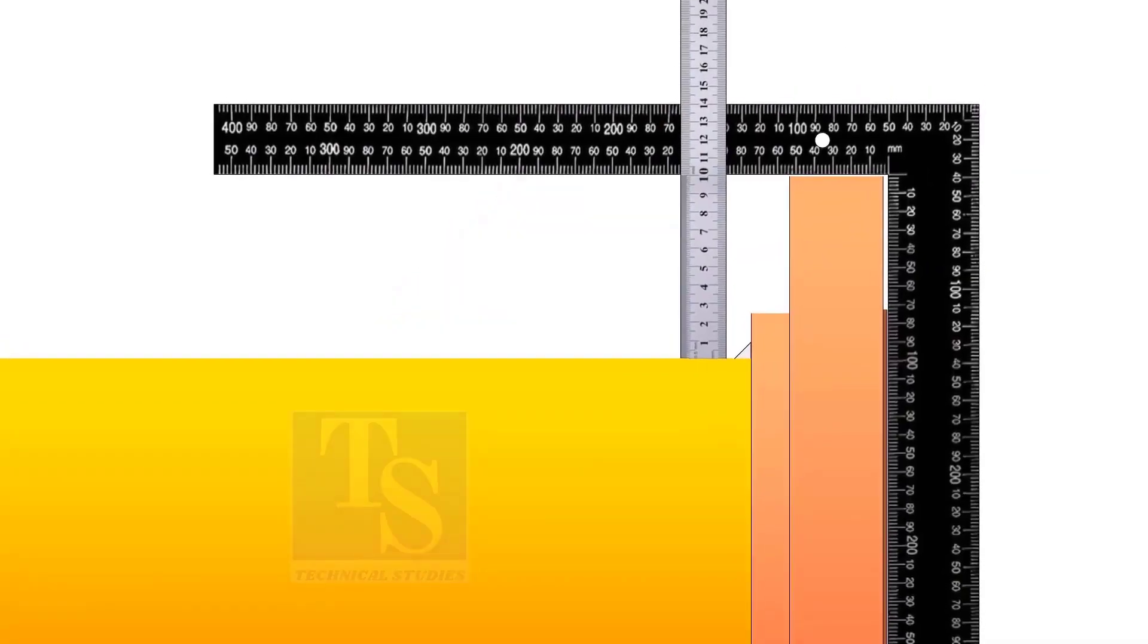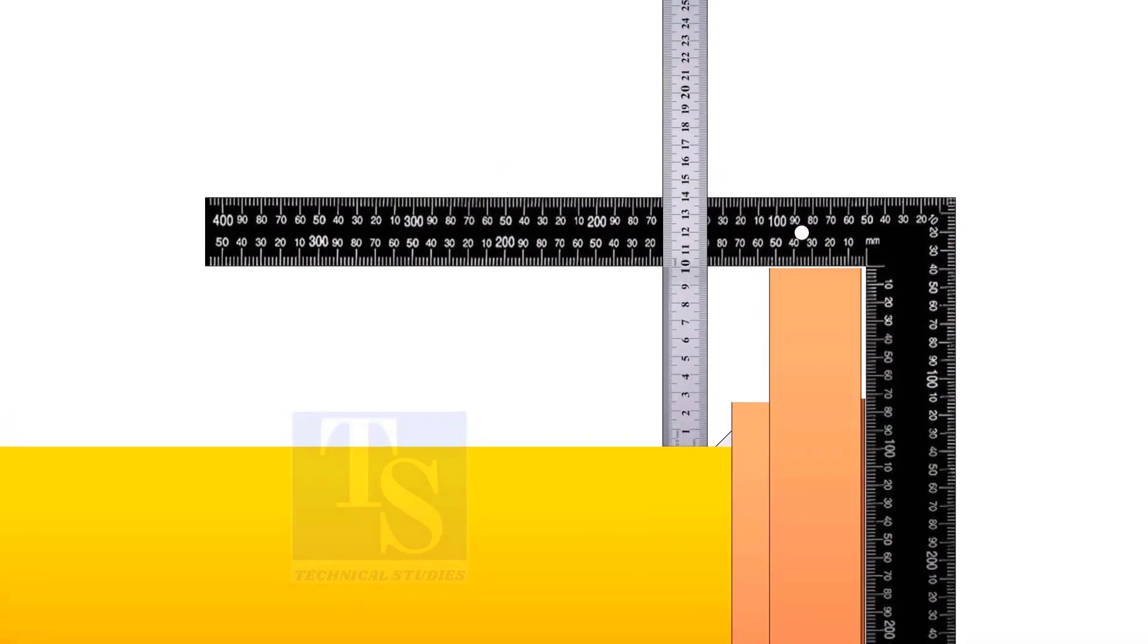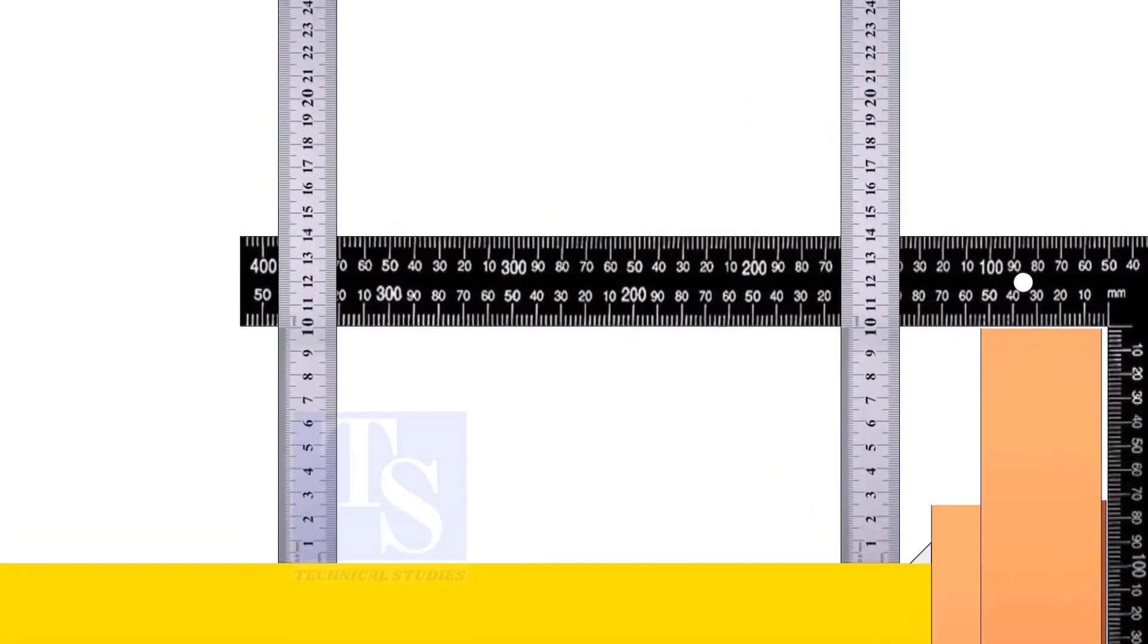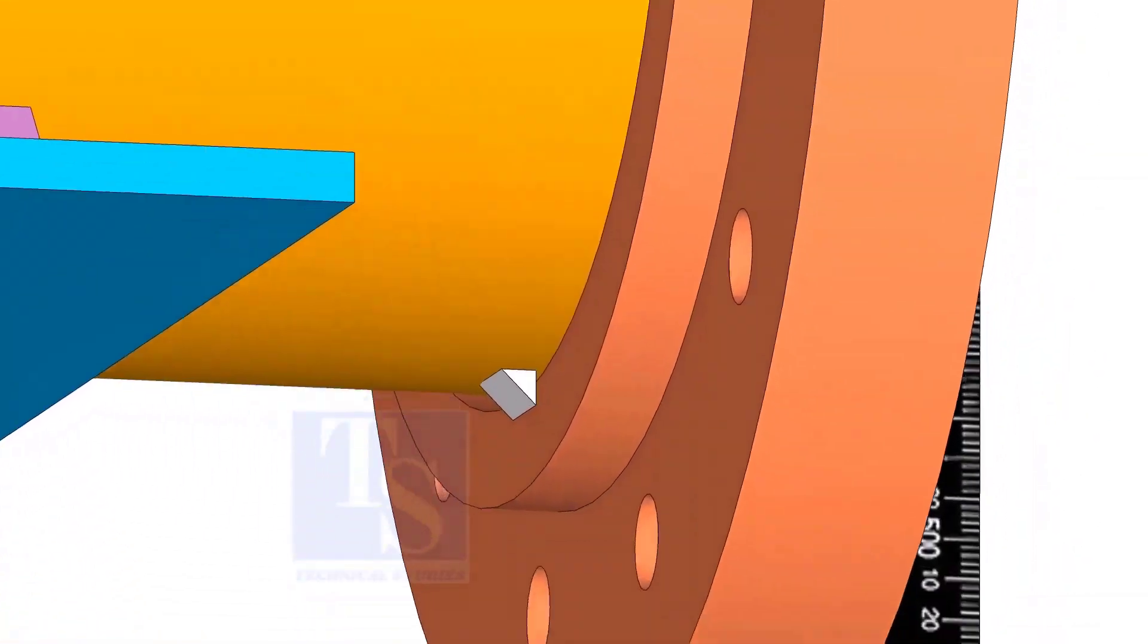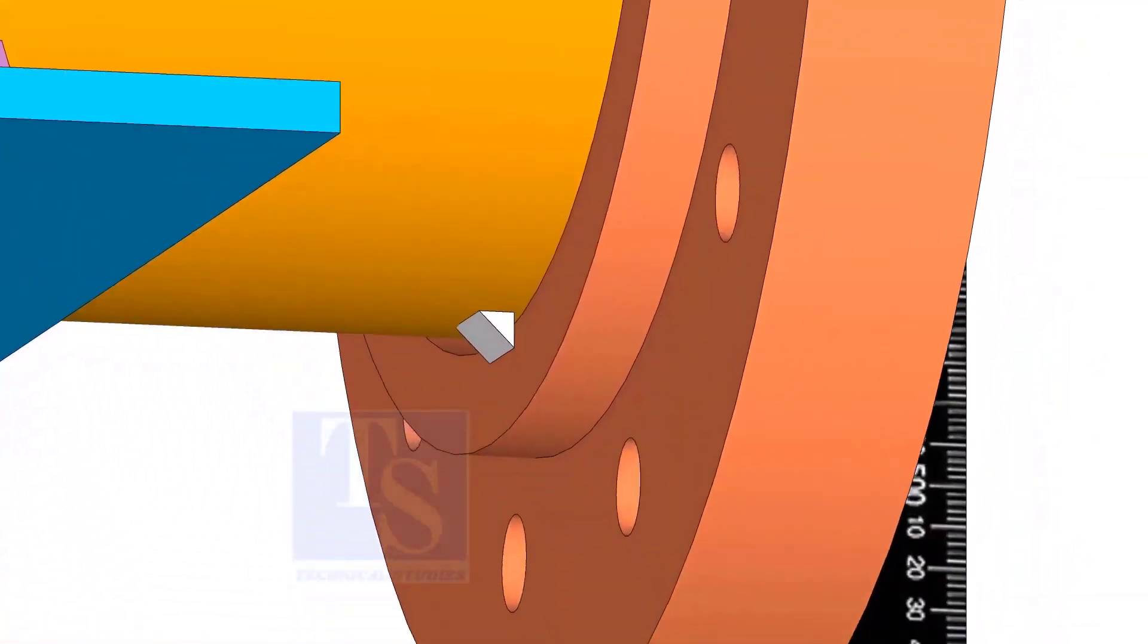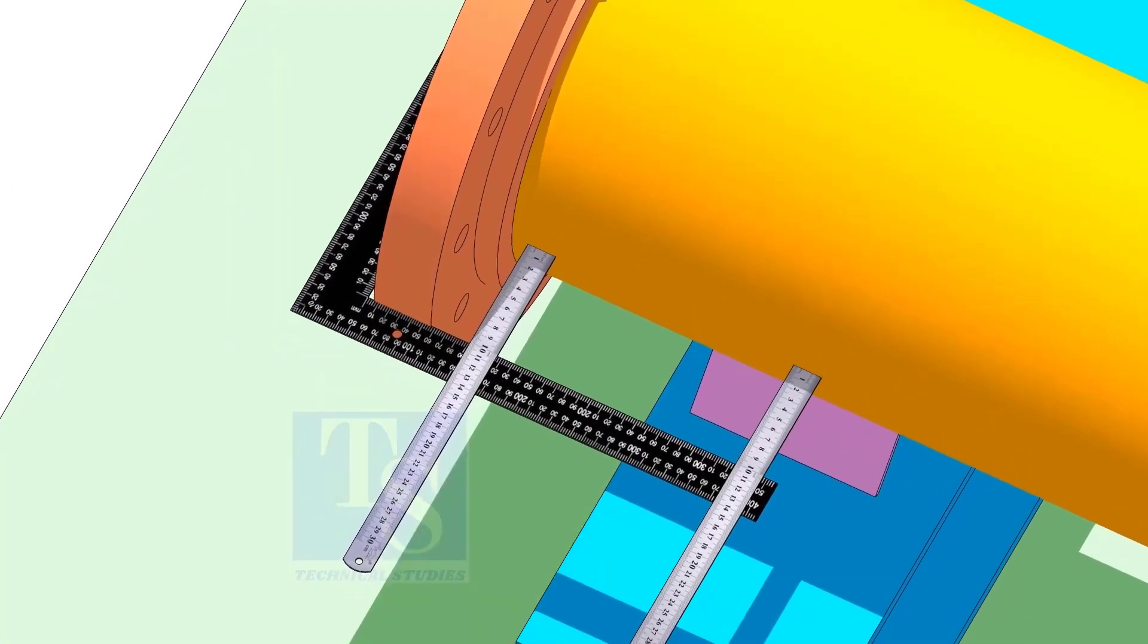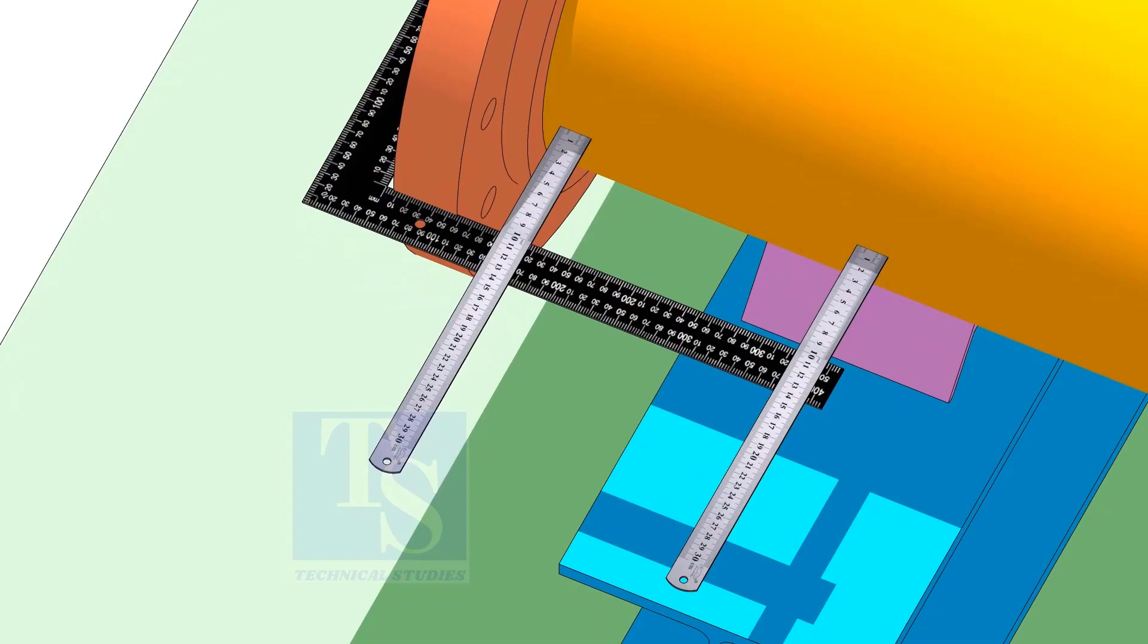Check the squareness of the flange face to the pipe. If the squareness is correct, tack weld in the bottom side. Correct the squareness on the side and tack weld on both sides.